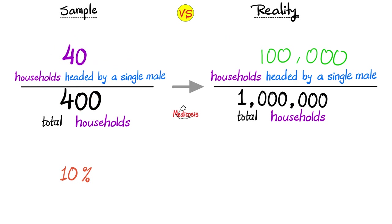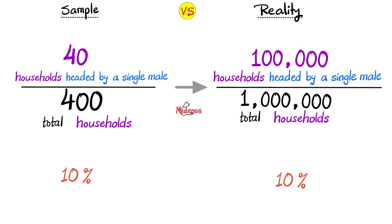If your sample is truly random and truly representative, then you can safely infer and your results will tend to be more accurate than not. The problem is that in today's world, people are lazy and the sample is rarely representative, let alone random. So you end up simply interviewing your buddies and find that 60% of households are headed by a single male — but in reality, your sample has nothing to do with real life. And we get deep in the mud when these results are used to advise government officials. So 40 to 400 in the sample is equivalent to 100,000 to 1 million in reality.